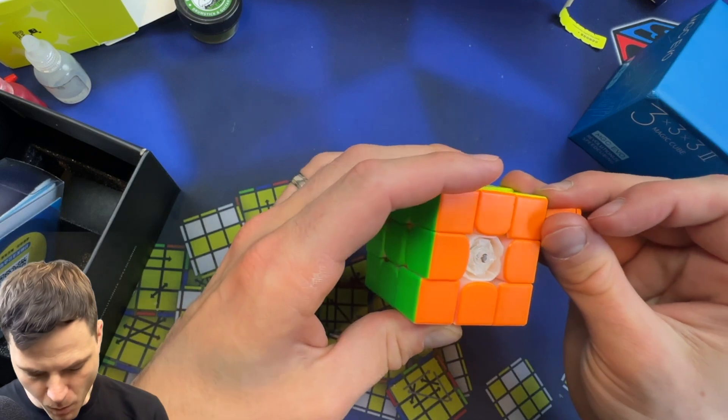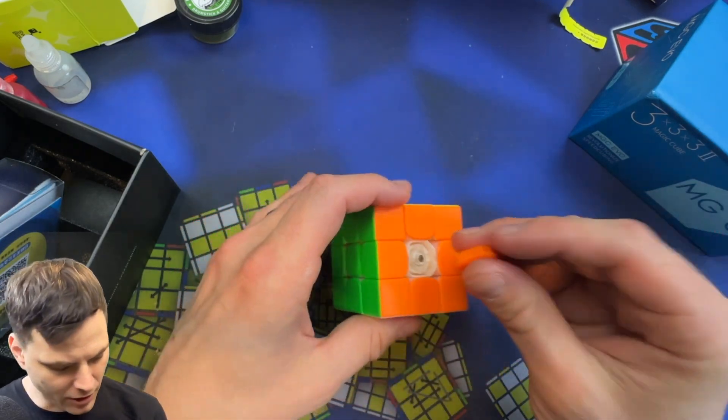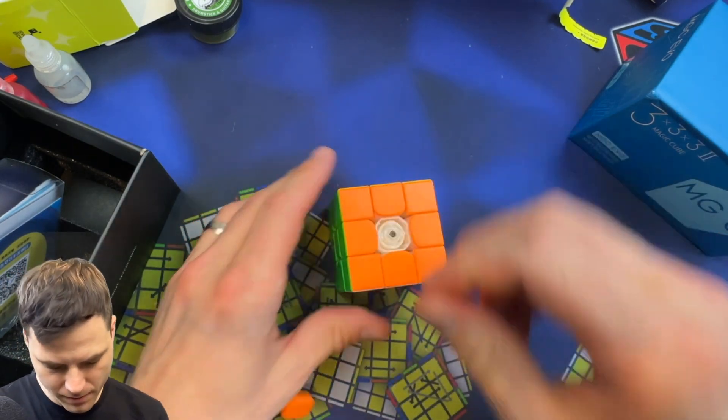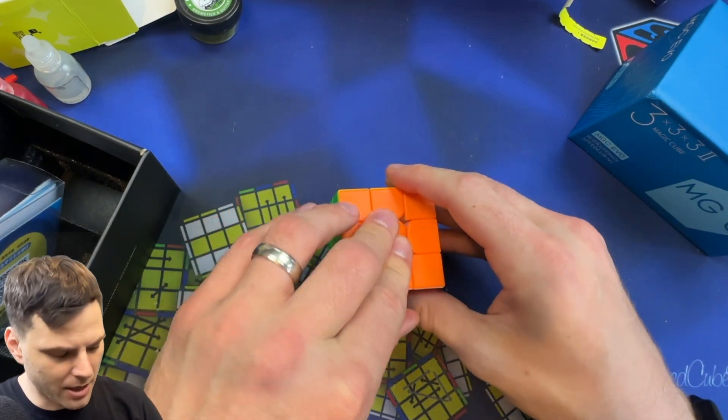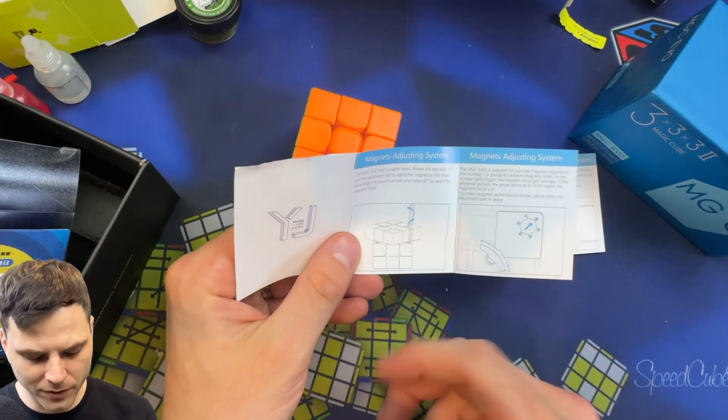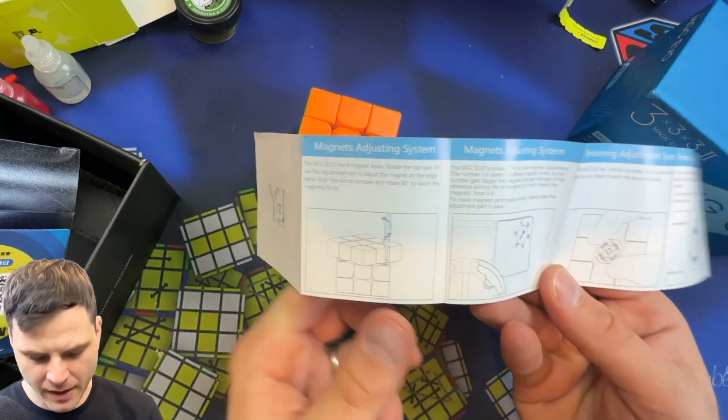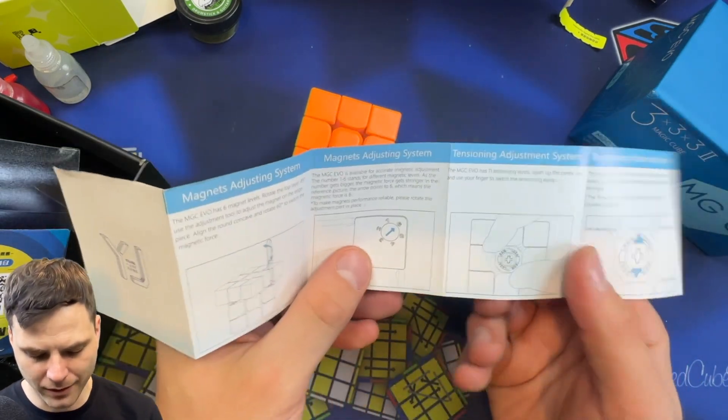Wow, okay, a lot of adjustments there. Before I do anything, what does all that mean? Okay, so with the screwdriver, you have six different adjustment settings for the magnets. It doesn't say which is stronger. I'm assuming six is.